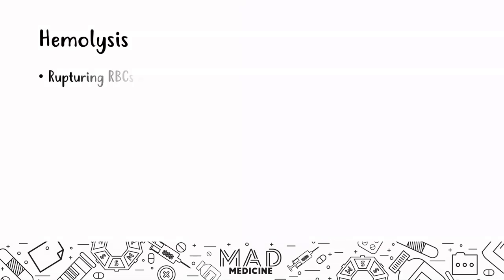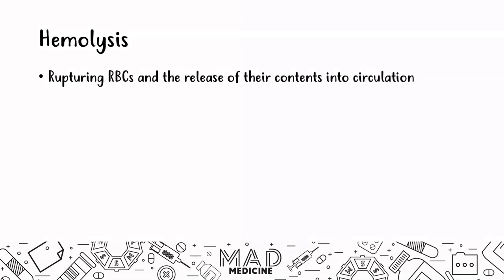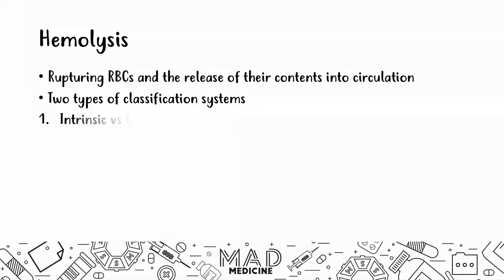Hemolysis is the rupturing of red blood cells and the release of their contents into circulation. The red blood cells are lysing, and you have a release of their intracellular contents into the plasma, into the bloodstream. Now, there are two main types of classifications when it comes to hemolysis. The first type is the extrinsic versus the intrinsic hemolysis classification.